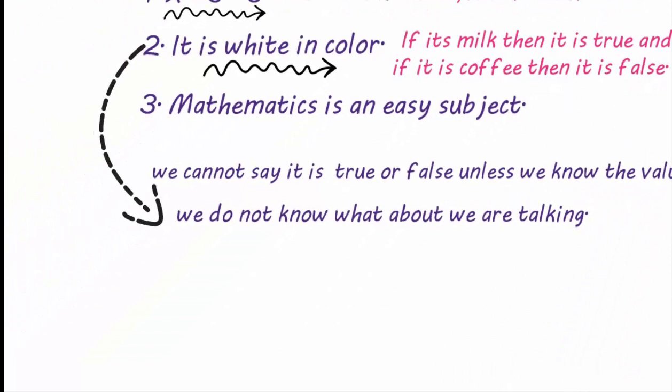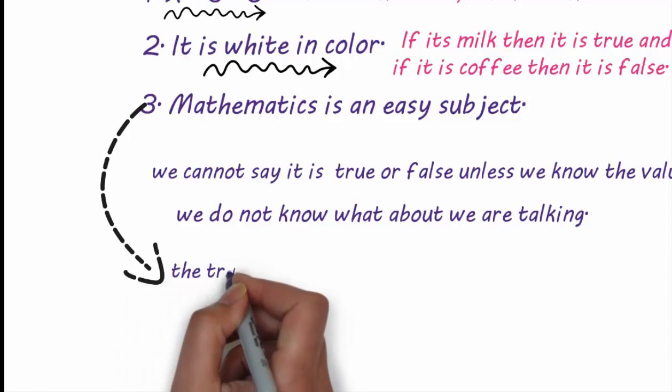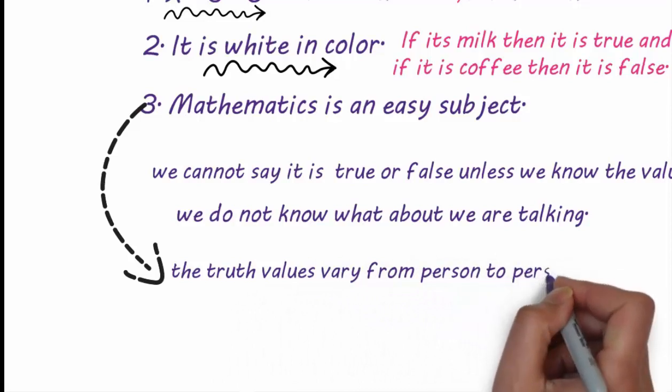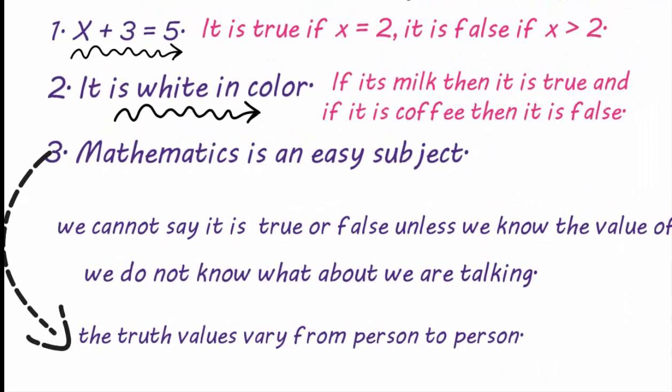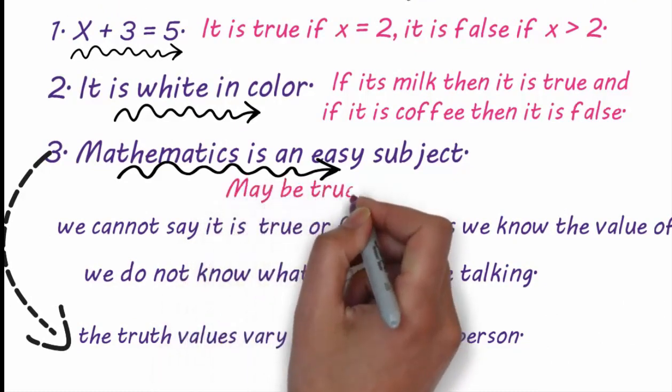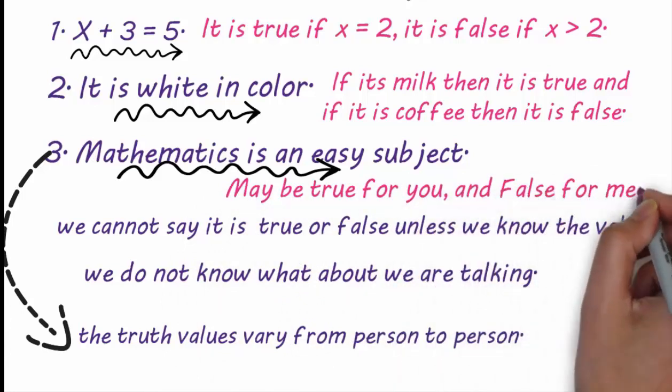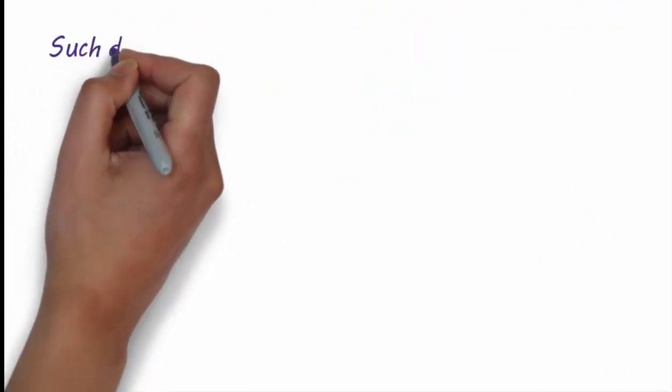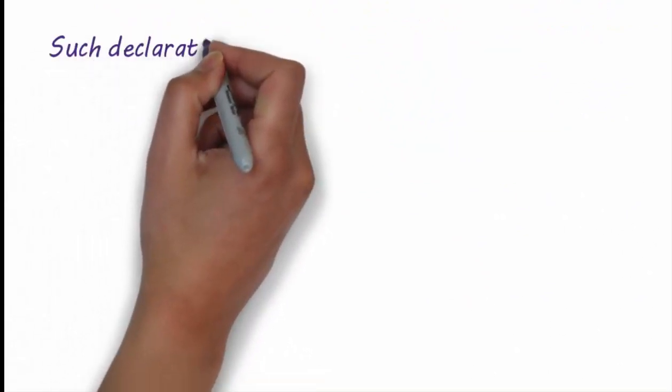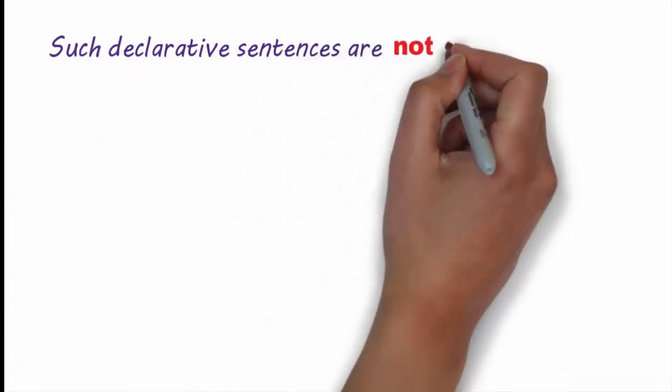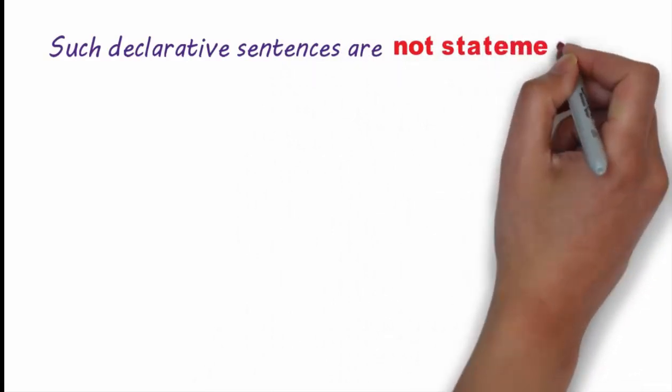In the third sentence, mathematics is an easy subject, the truth value varies from person to person. Such declarative sentences are not statements. They are called open sentences.